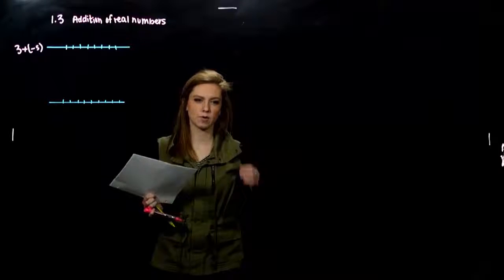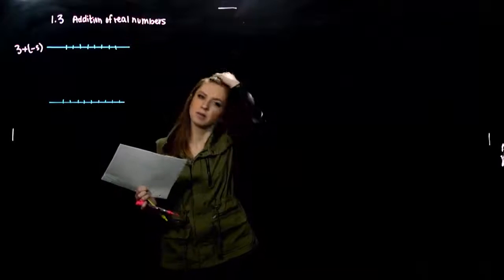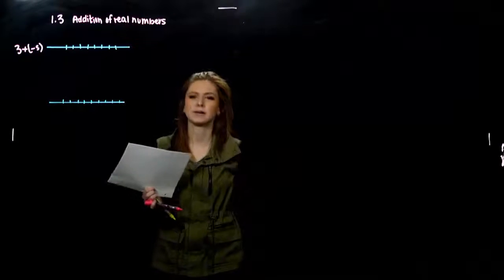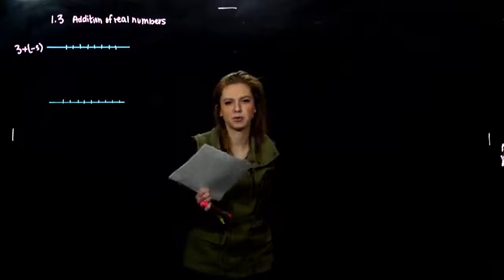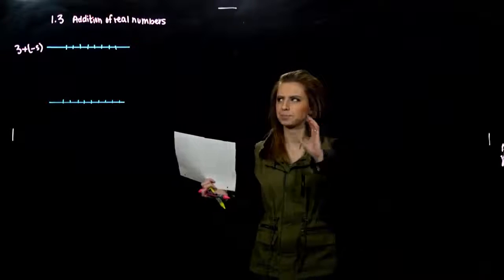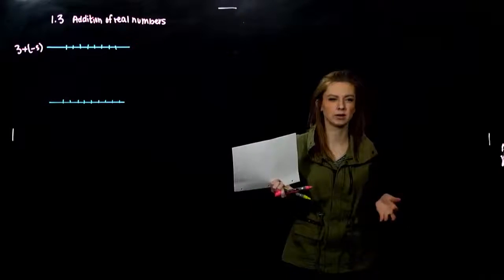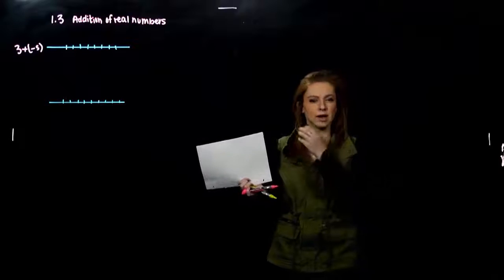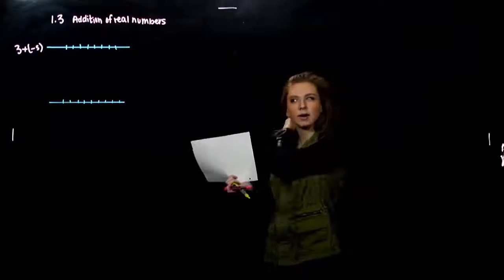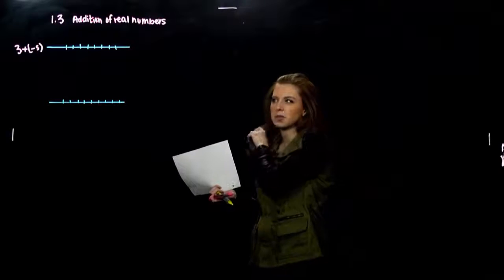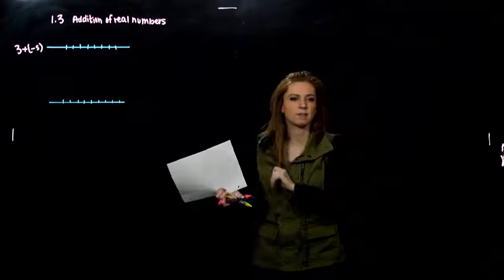So the next section is pretty straightforward. I'm assuming the majority of you are pretty comfortable adding and subtracting real numbers, but if you're not, what's going on with a number line? How can we visualize what we're asking when I say 3 plus a negative 5?